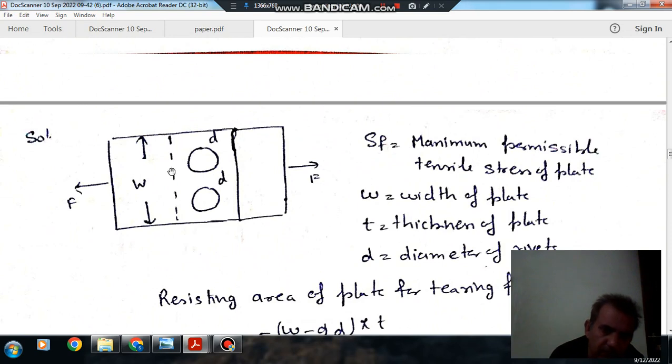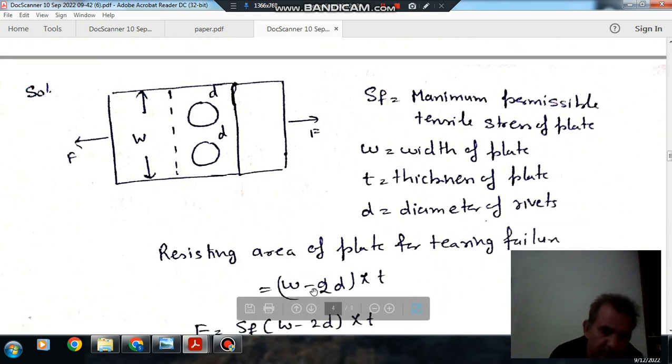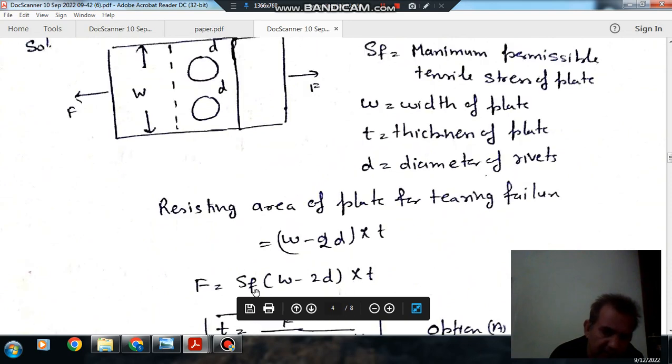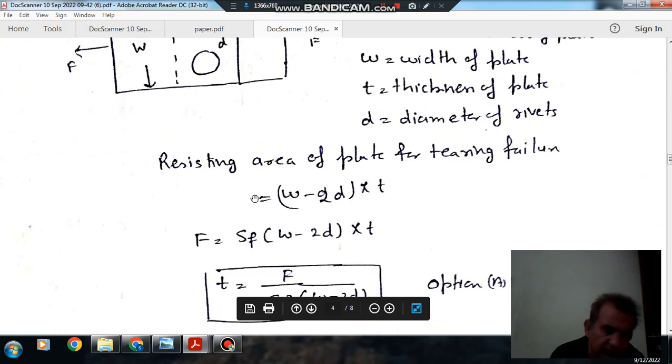So that will be W minus 2D and thickness is T. So then this will be the area and we multiply the tensile stress to avoid tearing failure, so F should be less than this. So T should be minimum.